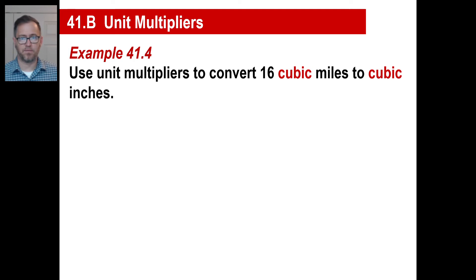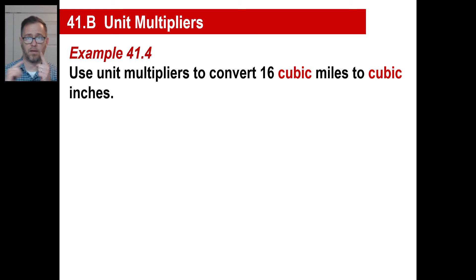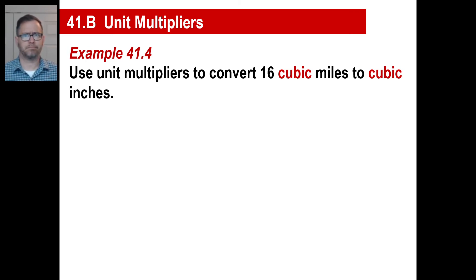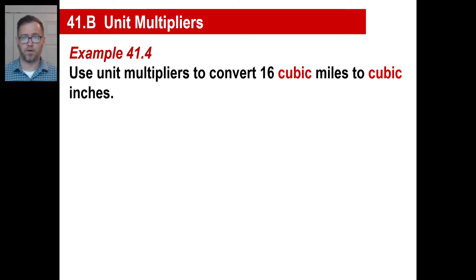We're going to convert 16 cubic miles to cubic inches. Can you visualize a cubic mile? You start here, you walk a mile, then you walk another mile — that's a square mile, which is gigantic. Then if you walk up a mile, this way a mile, that way a mile — that's a cubic mile, a 3D figure. Can you imagine how many cubic inches? A cubic inch is about the size of a die — unbelievable.